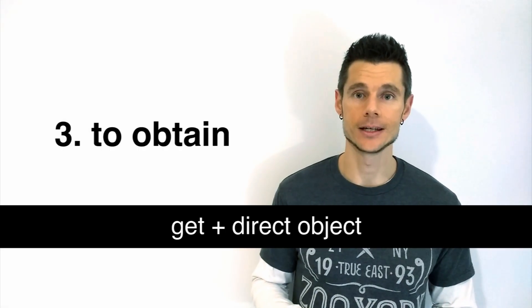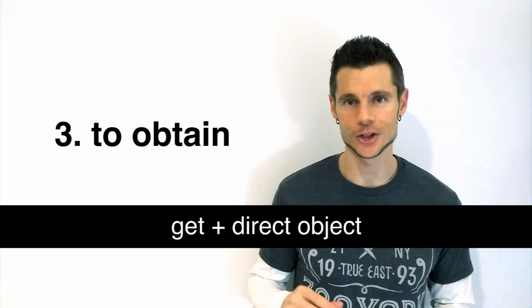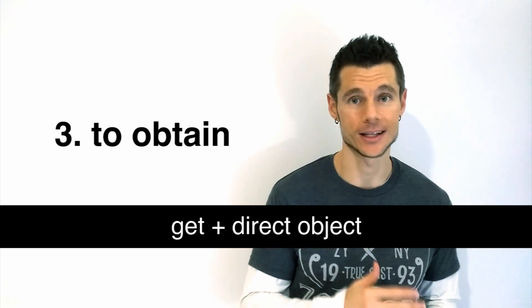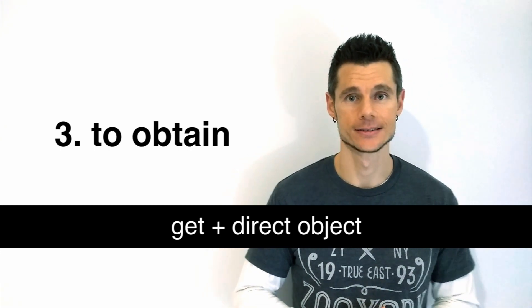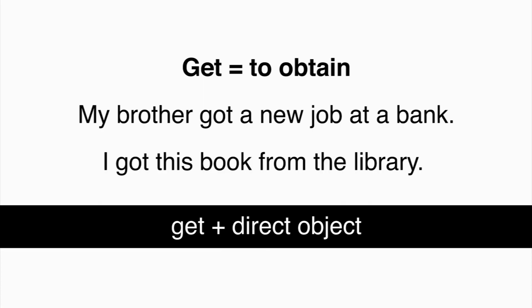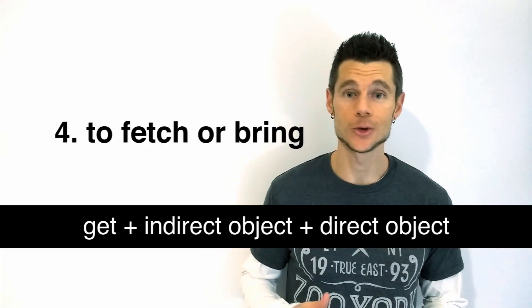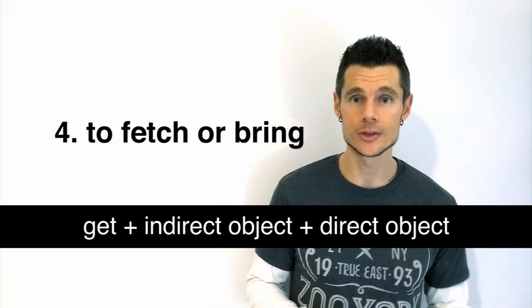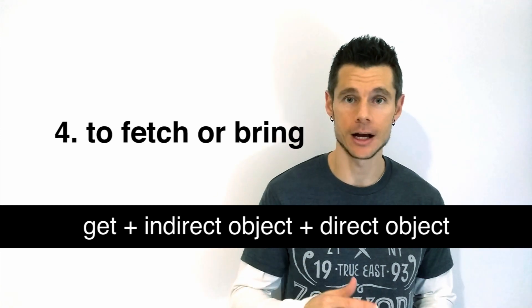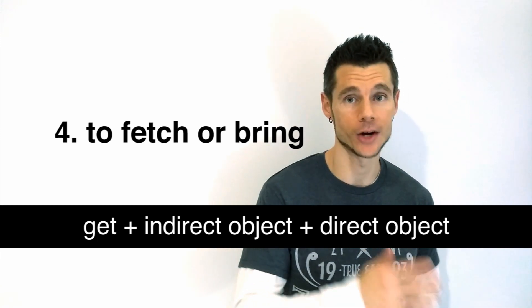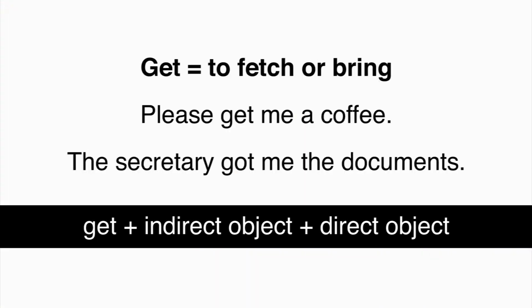GET can mean to obtain. The structure used is GET plus direct object. My brother got a new job at a bank. I got this book from the library. GET can mean to fetch or bring. The structure used is GET plus indirect object plus direct object. Please get me a coffee. The secretary got me the documents.